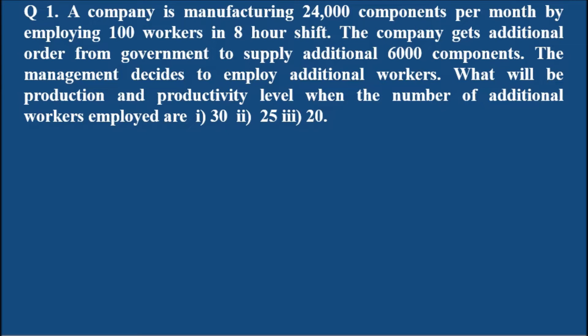A company is manufacturing 24,000 components per month by employing 100 workers in 8 hour shift. The company gets additional order from government to supply additional 6,000 components. The management decides to employ additional workers. What will be the production and productivity level when the number of additional workers employed are 30, 25 and 20?